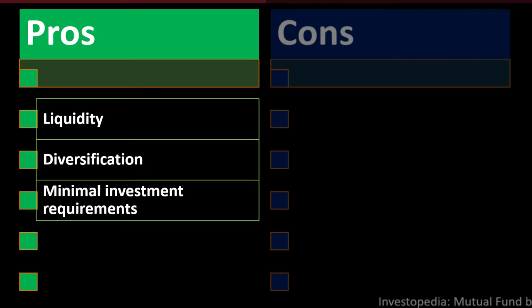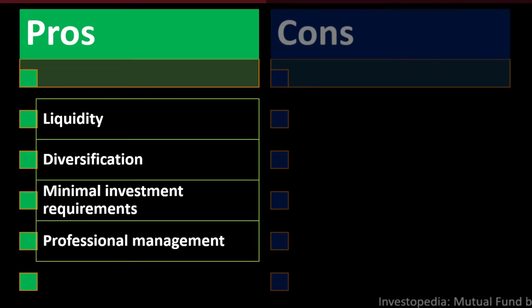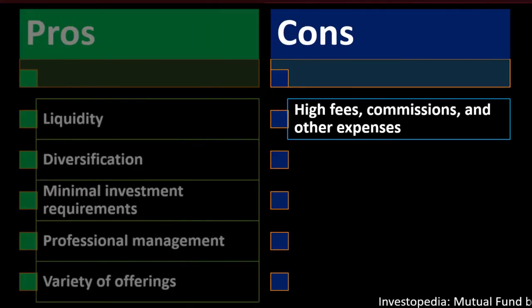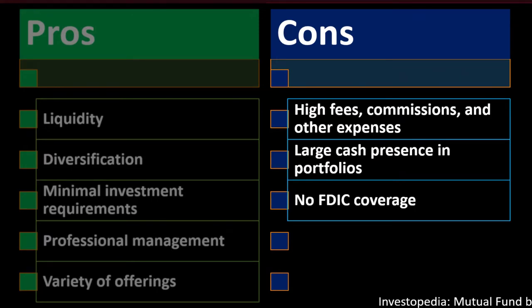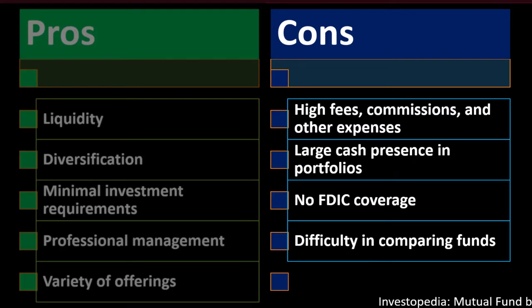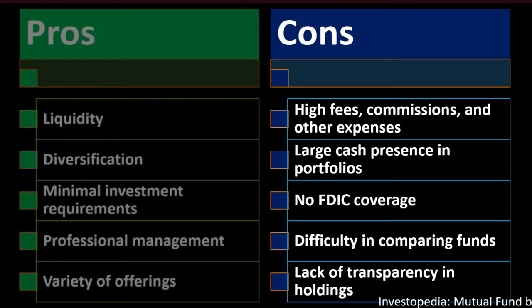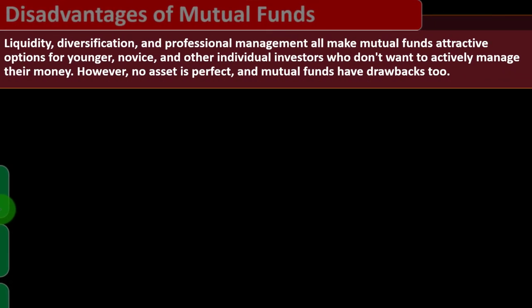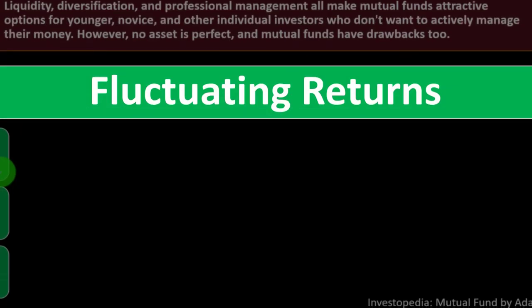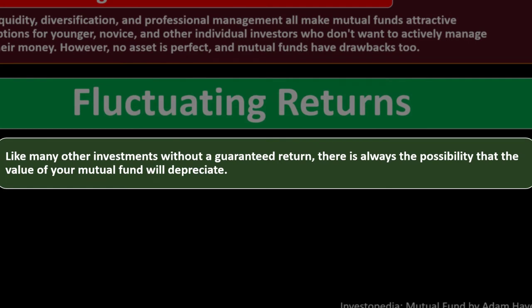The pros of mutual funds include: liquidity, diversification, minimal investment requirements, professional management, and variety of offerings. On the con side: high fees, commissions and other expenses, large cash presence in portfolios, no FDIC coverage, difficulty in comparing funds, and lack of transparency in holdings. Liquidity, diversification, and professional management all make mutual funds attractive options for younger, novice, and other individual investors who don't want to actually manage their money.